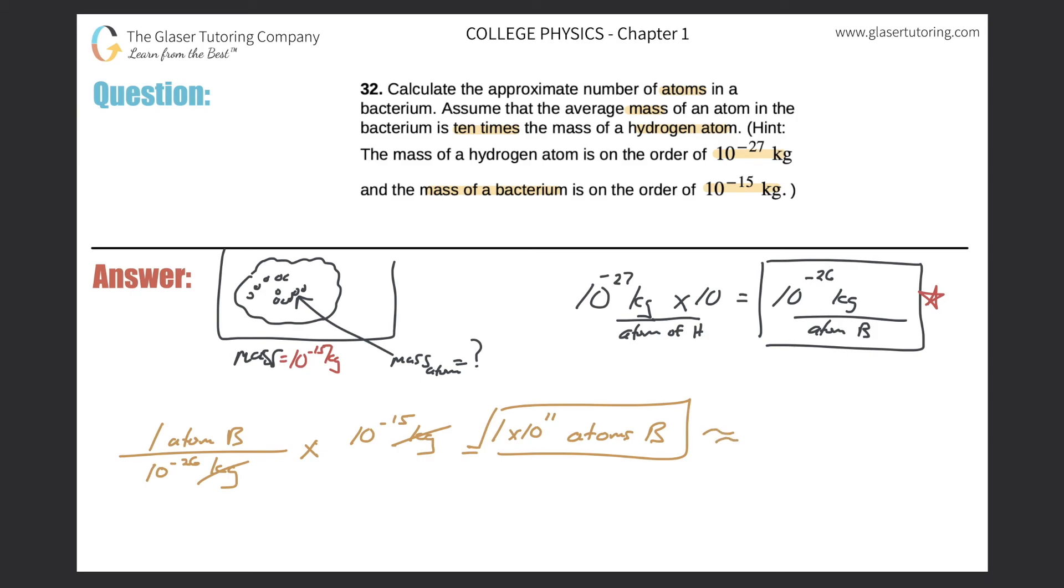And in other words, you don't need the 1. It's just 10 to the 11 atoms of bacterium. And this should make sense. There should be a whole bunch of atoms within that single bacterium. Guys, thank you for checking out this video. Hope it helped. Please subscribe.